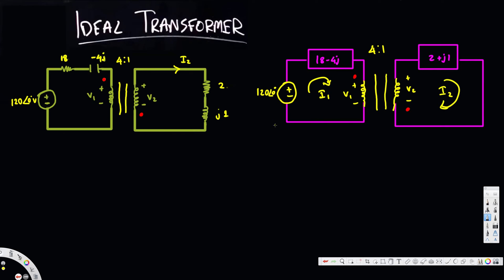When dealing with ideal transformers there are two equations. The first equation is I1 over I2 equals N2 over N1, and the second equation is V1 over V2 equals N1 over N2. We also have to decide whether these will be positive or negative.